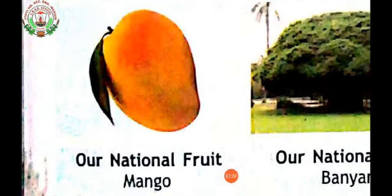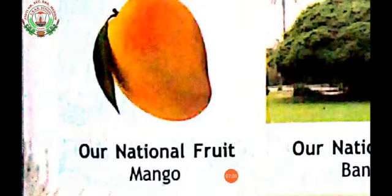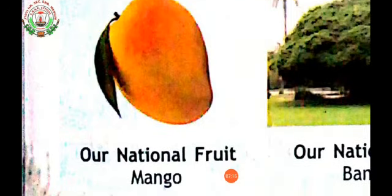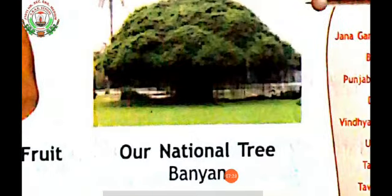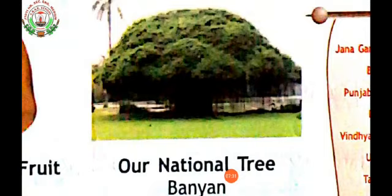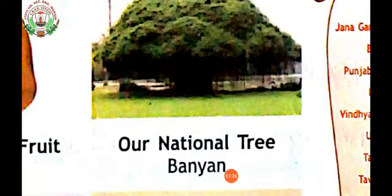Now come to the next picture — what is this, children? This is mango. You all love to eat mango, isn't it? Which is the national fruit of our country? Mango is the national fruit of our country. Now come to the next picture — what is this, children? This is a banyan tree, which we also call in Hindi 'Bargad ka peed.' Banyan is our national tree.